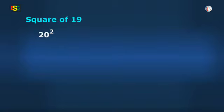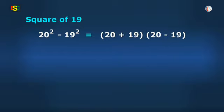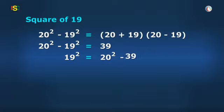20 square minus 19 square will be 20 plus 19 into 20 minus 19, which is 39 into 1, or 39. So, 19 square is equal to 20 square minus 39.